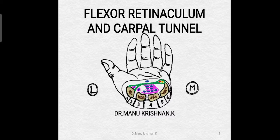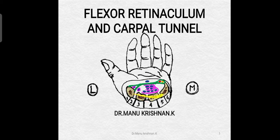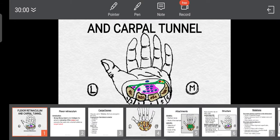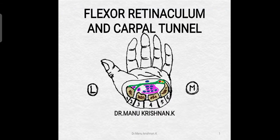Here in this diagram you can see a cross-section made at the level of the wrist joint, and you can see a set of bones. You can see 4 bones here. So there are a set of 8 bones which form the wrist joint, and that is called as the carpal bones.